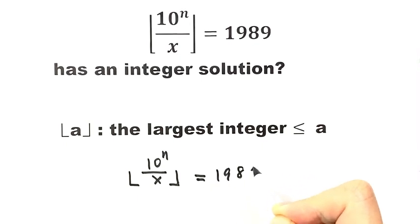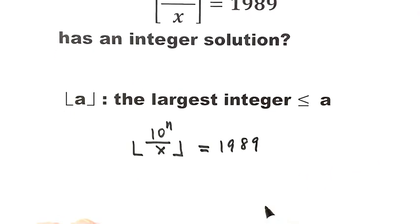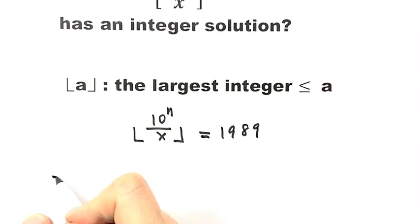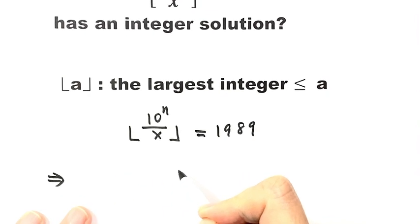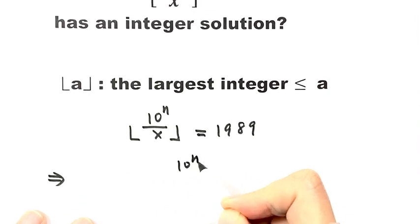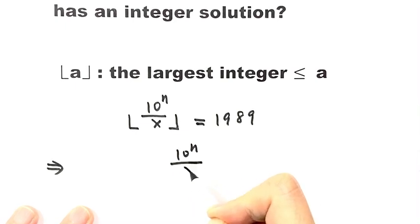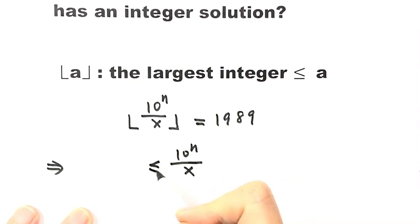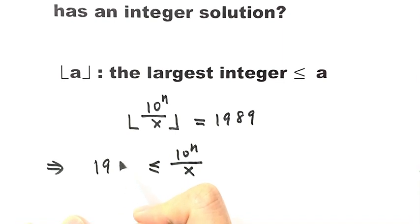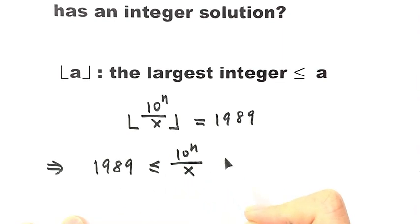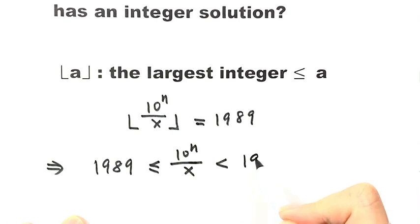That means 10 to the power n over x is greater than or equal to 1989, and less than the next integer, 1990.